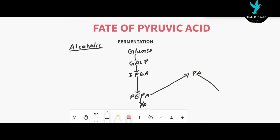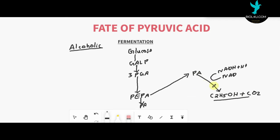During alcoholic fermentation, pyruvic acid undergoes reduction with the help of NADH₂ already produced in glycolysis. NADH acts as a reducing agent and undergoes re-oxidation to produce NAD⁺, and the hydrogen is used for the reduction of pyruvic acid. As a result, ethyl alcohol (C₂H₅OH) forms along with a molecule of carbon dioxide. The net energy profit here is two ATP molecules already formed in glycolysis.